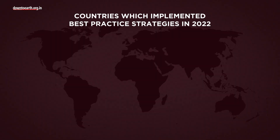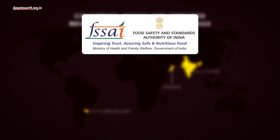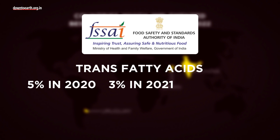In 2022, three countries implemented best practice policies. The Food Safety and Standards Authority of India capped the amount of trans fatty acids in oils and fats from 5% in 2020 to 3% in 2021 and 2% in 2022, through an amendment to the Food Safety and Standards Regulations.